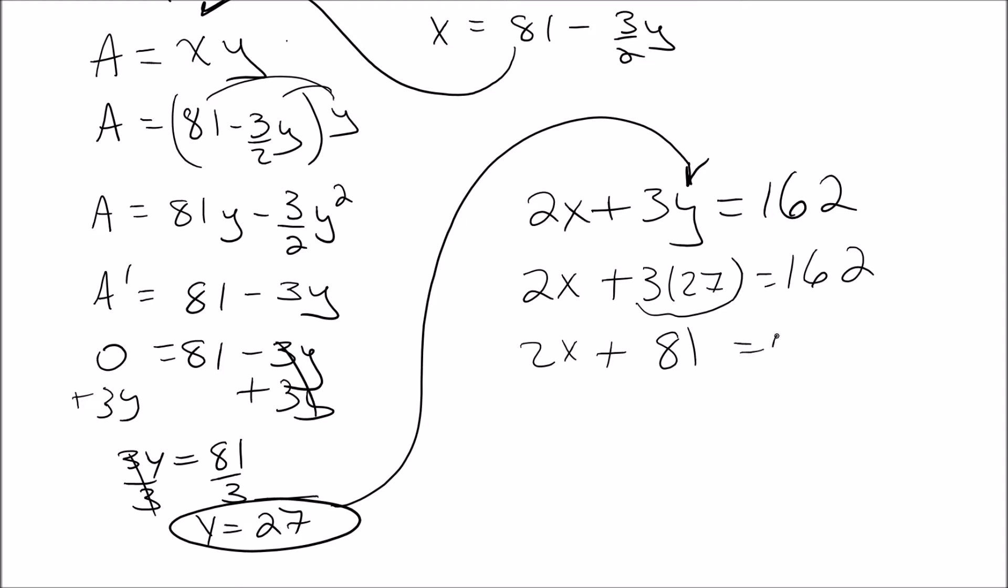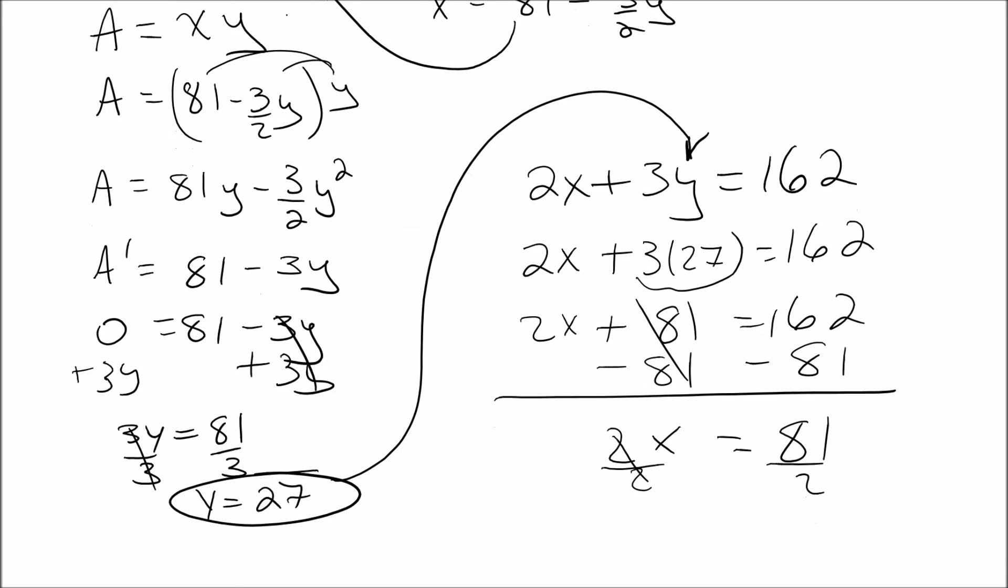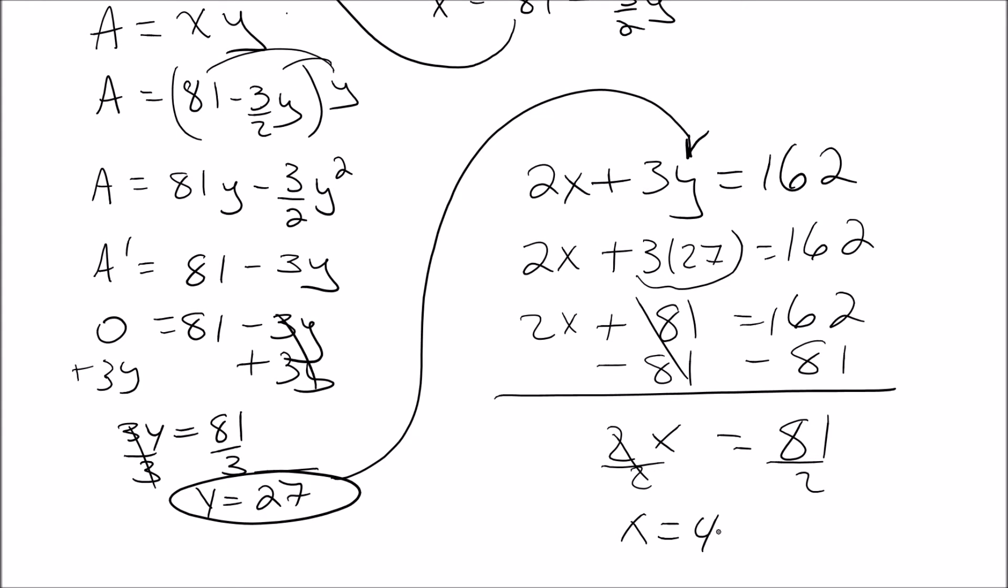So 2X plus 81 equals 162. We'll minus off the 81. We'll get 81 equals 2X, divide by 2, and we'll get that X equals 40.5.